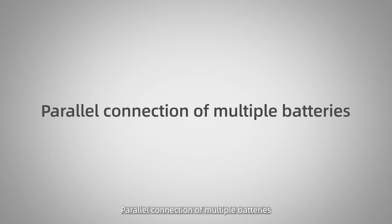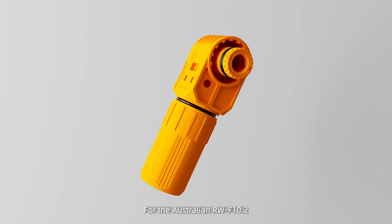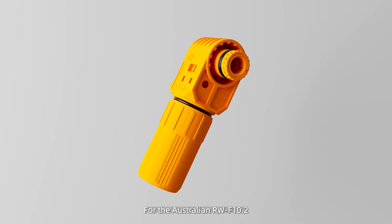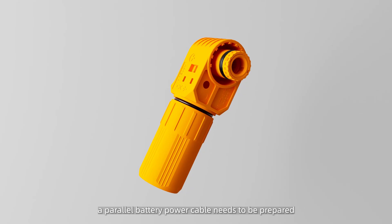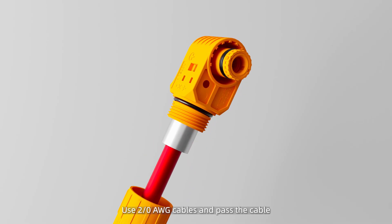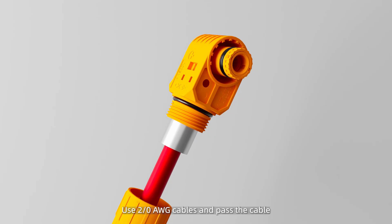Parallel connection of multiple batteries. For the Australian RWF10.2, a parallel battery power cable needs to be prepared. Use two zero AWG cables and pass the cable bundle through the plastic part of the connector.